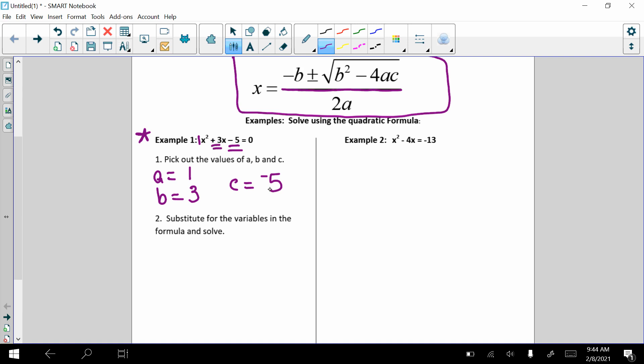Now what we're going to do is we're just going to substitute these values into the quadratic formula. So x equals the opposite of b, so the opposite of 3, so negative 3, plus or minus the square root of b squared, so 3 squared, minus 4 times the a value of 1, times the c value of negative 5. And that's all divided by 2 times the a value, which in this case is 1.